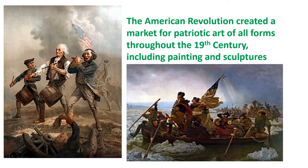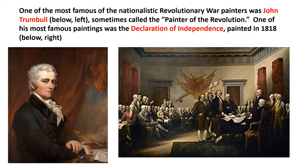The American Revolution created a market for patriotic art of all forms throughout the entire 19th century, including paintings and sculptures. One of the most famous nationalistic Revolutionary War painters was John Trumbull, sometimes called the painter of the Revolution. One of his most famous paintings was the Declaration of Independence, painted in 1818 — not historically accurate, but dating close to the time of the signing.